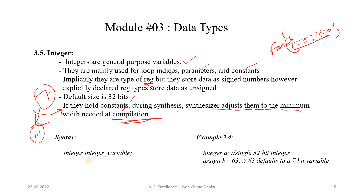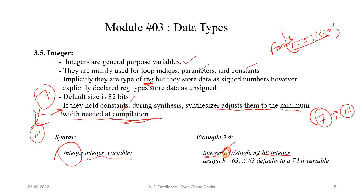The syntax is: integer followed by the variable name. For example, declaring integer A gives a 32-bit integer by default. During synthesis, depending on the value of A, the synthesizer translates it to the minimum width needed. For instance, if integer B = 63, the width of B will be 7 bits because the decimal constant 63 can be represented by a 7-bit value.